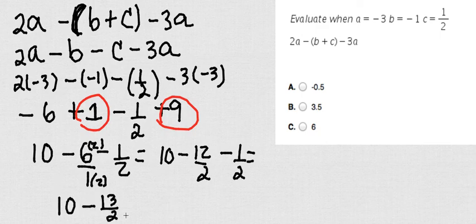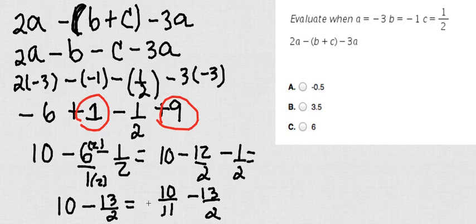10 minus 13 over 2. Finally, I can go ahead and say 10 over 1 minus 13 over 2. I go ahead and put the same denominator again,